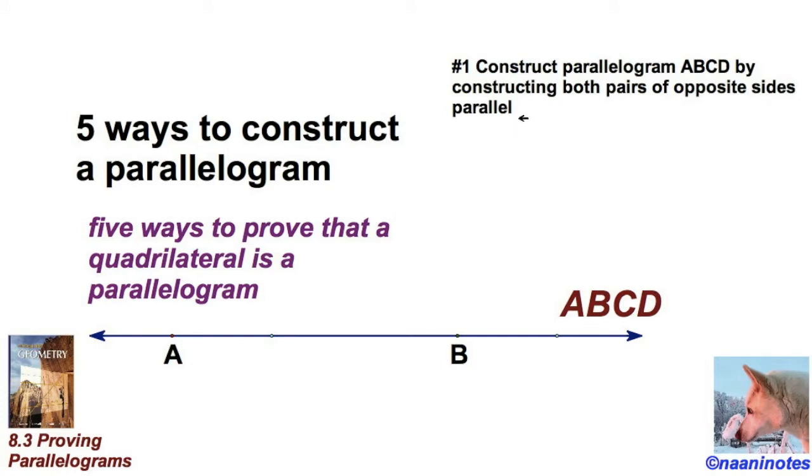We're going to construct quadrilateral ABCD from this given line by constructing both pairs of opposite sides parallel. That's the very definition. Let's get to it.